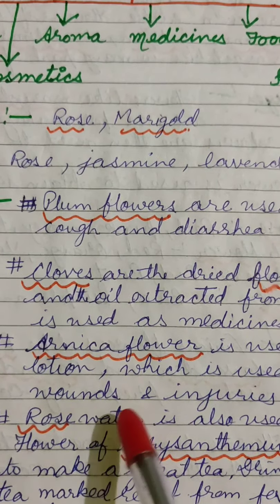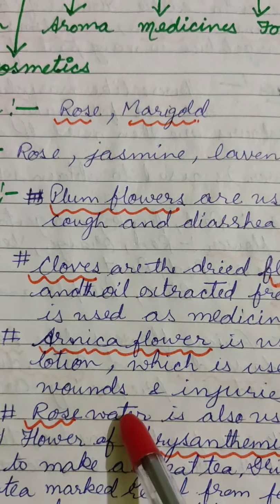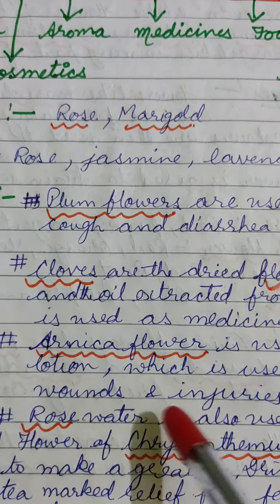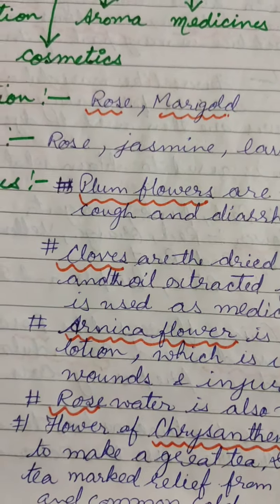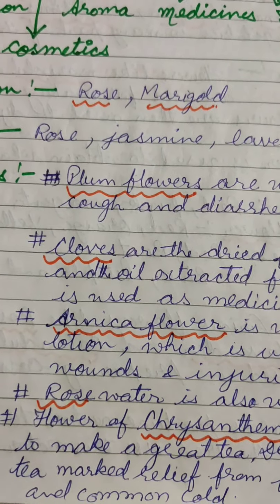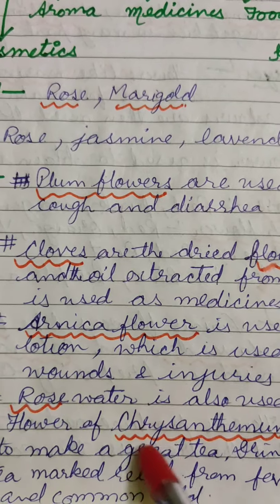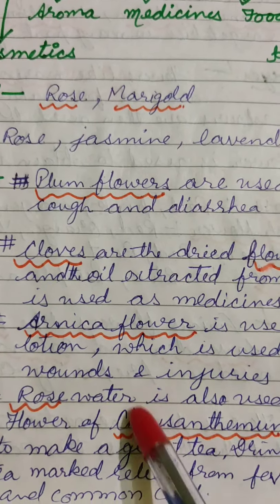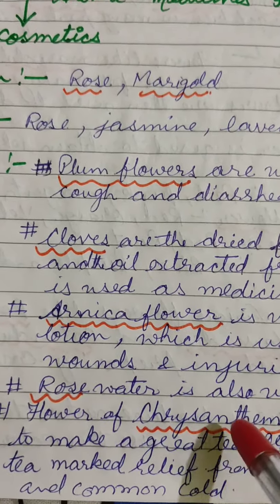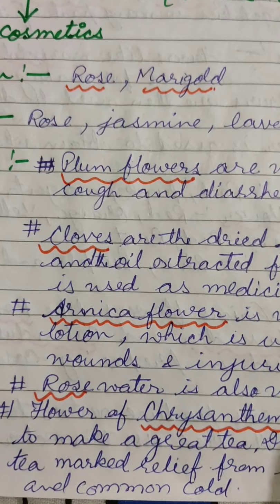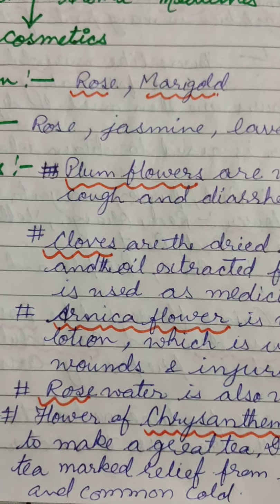Rose water is used in cosmetics as well as for making various dishes in the kitchen, and it is also used as a medicine. The flowers of the chrysanthemum plant are used for making a great tea, and drinking this tea relieves us from fever, headache, and the common cold.